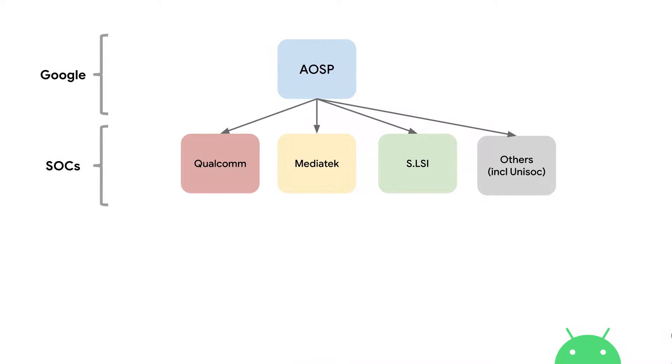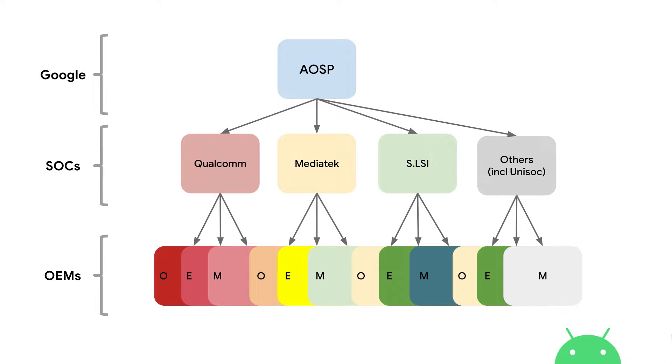Well, when we released Android 10, we pushed a bunch of open sources to the Android Open Source Project, or AOSP. What then happens is silicon manufacturers, such as Qualcomm and MediaTek, adapt this code base to their CPUs, to their mobile SOCs. And then they turn around and give that code that they've modified to their OEM partners, companies such as Samsung, Sony, et cetera.